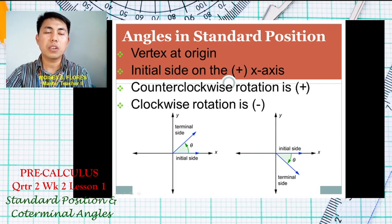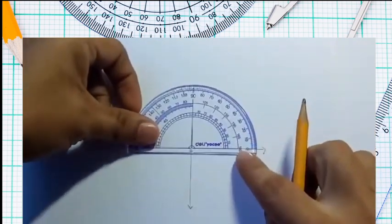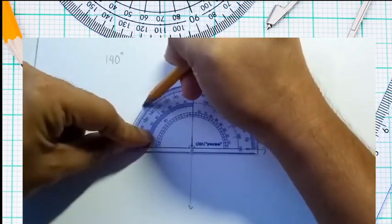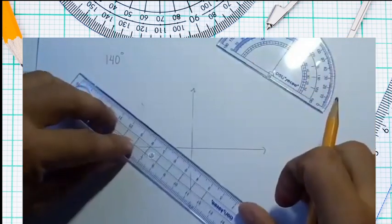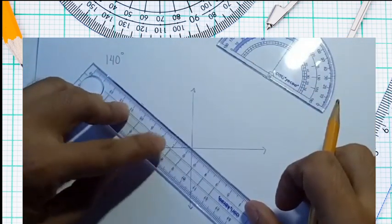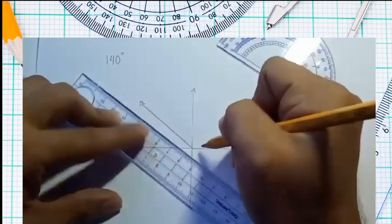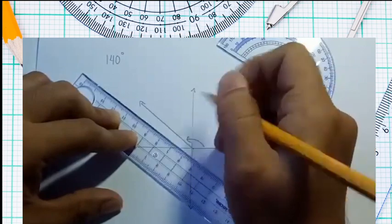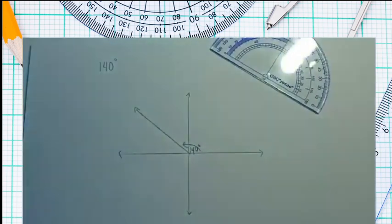For example, how do we sketch 140 degrees? We get our protractor, align it with the x-axis, and locate 140 degrees. Then we use a ruler to draw the terminal side. There you have it — it is a positive angle, so it is in the counterclockwise direction, and it is labeled 140 degrees.